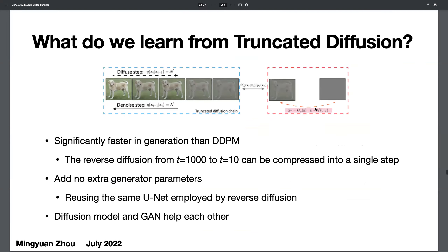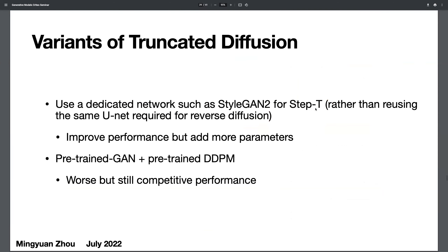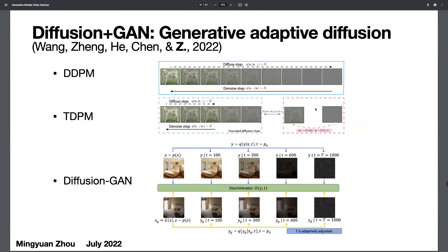What do we learn from this model? First, it is significantly faster. There are no extra generative parameters. And the diffusion model and GAN help each other.